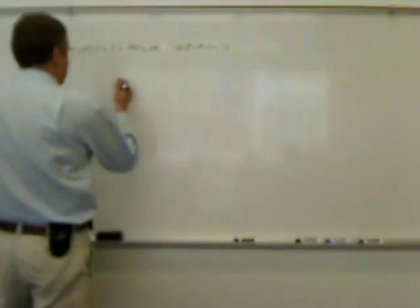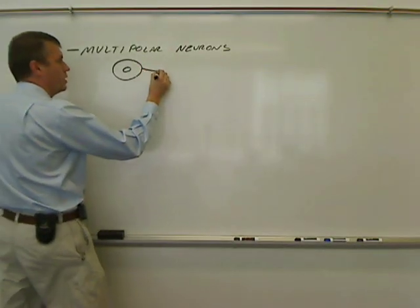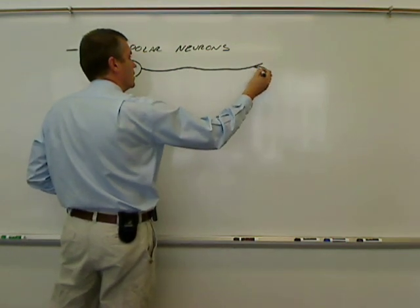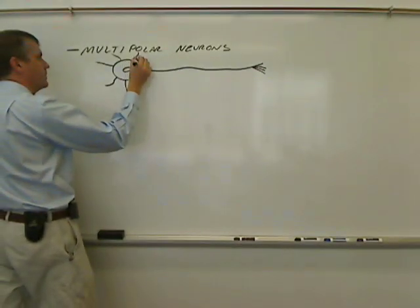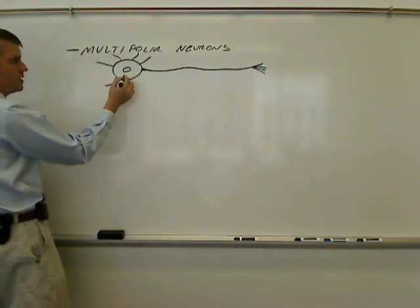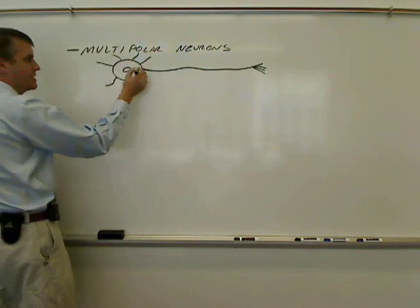If I were to draw this type of neuron, I would draw a soma, or cell body, with a nucleus, and then one long structure coming away from it, which would be the axon, and then several smaller structures, which would be the dendrites. Again, multipolar because from the cell body, or soma, we have several structures stemming.